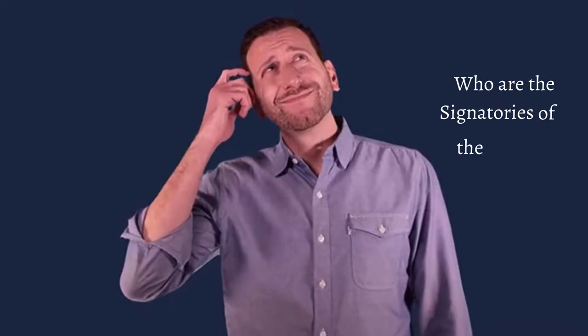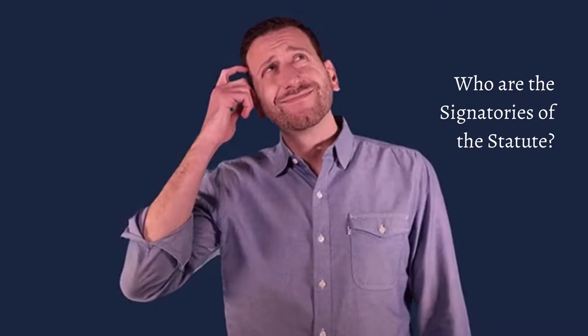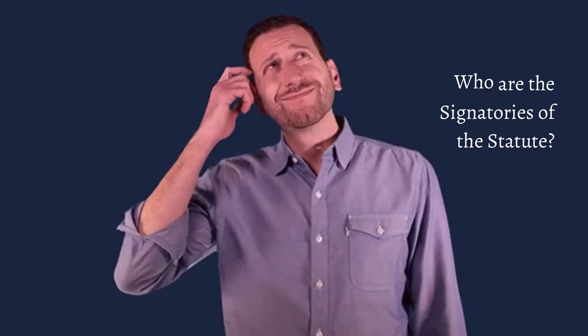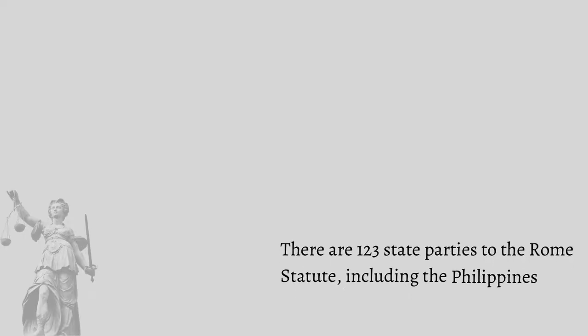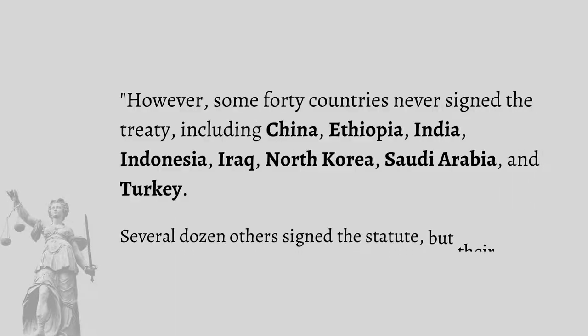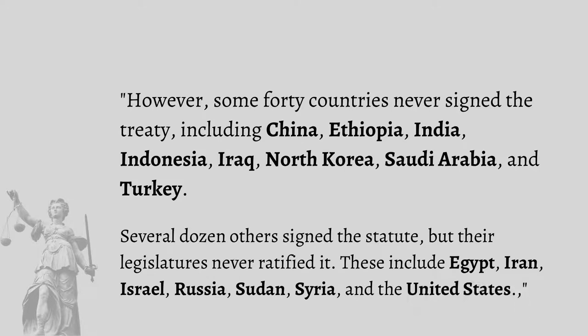Who are then the signatories of this statute? Well, there are a total of 123 state parties to the Rome Statute, including the Philippines. However, some 40 countries never signed the treaty, including the states of China, Ethiopia, India, Indonesia, Iraq, North Korea, Saudi Arabia, and Turkey. Several dozen others signed the statute, but their legislatures never ratified it.